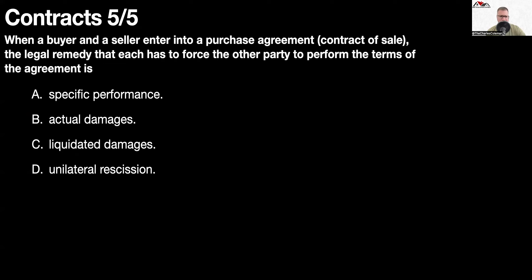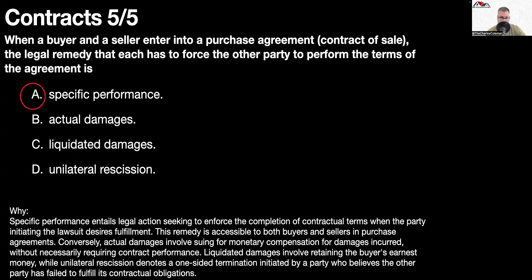Question number five: when a buyer and a seller enter into a purchase agreement contract of sale, the legal remedy that each has to force the other party to perform the terms of the agreement is specific performance. Specific performance entails legal action seeking to enforce the completion of contractual terms when the party initiating the lawsuit desires fulfillment. This remedy is accessible to both buyers and sellers in purchase agreements. Actual damages involve suing for monetary compensation for damages incurred without necessarily requiring contract performance. Liquidated damages involves retaining the buyer's earnest money, while unilateral rescission denotes a one-sided termination initiated by a party who believes the other party has failed to fulfill its contractual obligations.